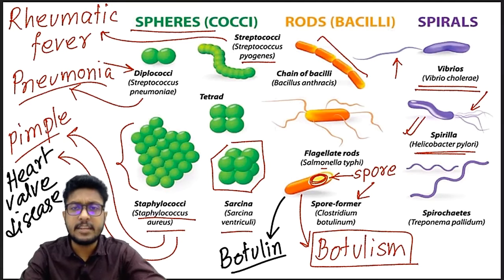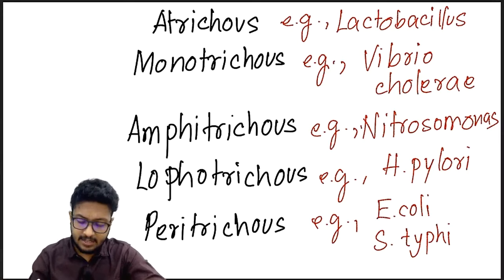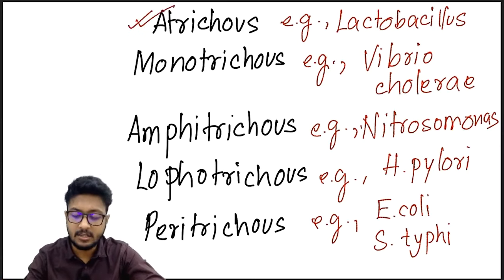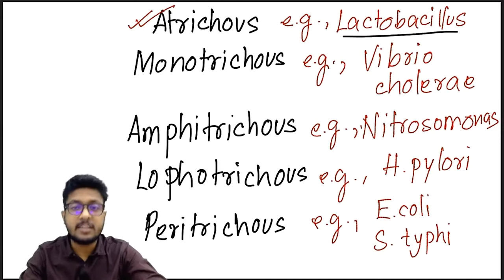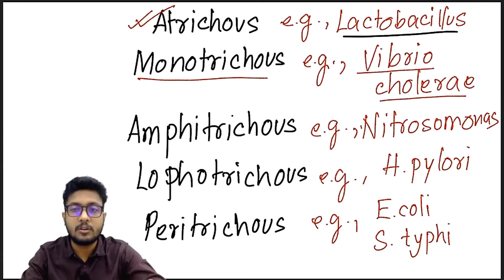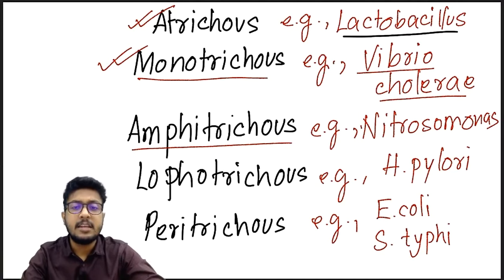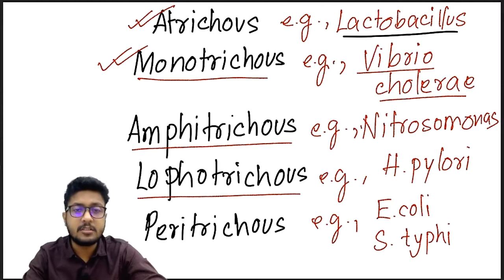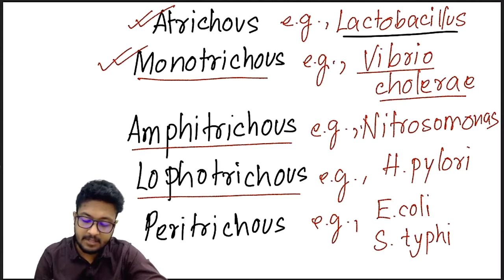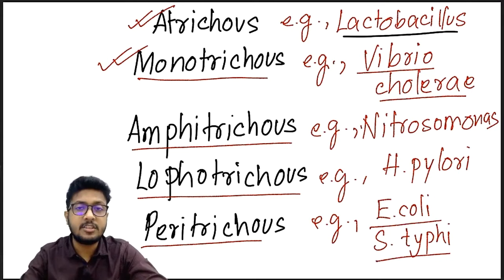To recap bacteria by flagellar type: Atrichous — no flagella — example Lactobacillus found in curd. Monotrichous — single flagellum at one pole — example Vibrio cholerae causing cholera. Amphitrichous — flagella from both poles — example Nitrosomonas involved in nitrogen fixation. Lophotrichous — tuft at one pole — example Helicobacter pylori causing peptic ulcers. Peritrichous — flagella all over — examples Escherichia coli and Salmonella typhi.